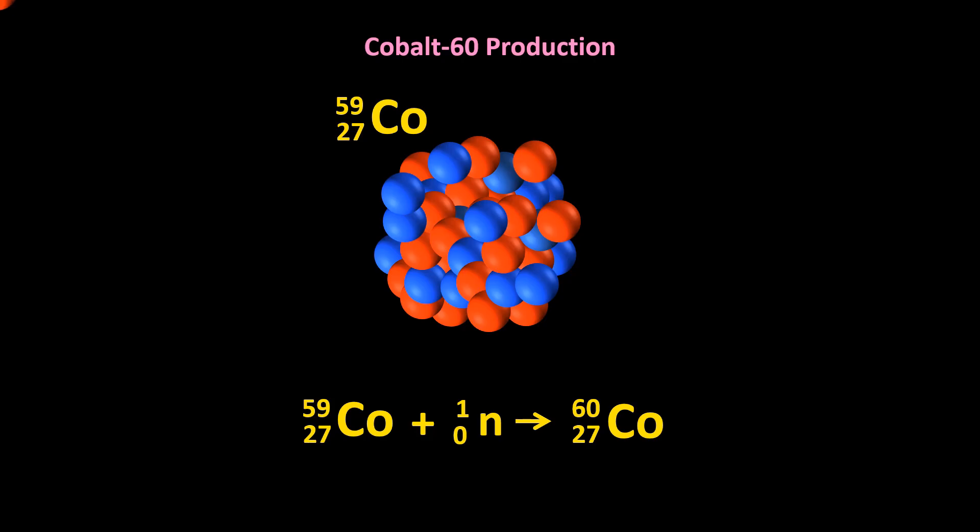So, if cobalt-59, for example, is placed into the chamber, the cobalt-59 nuclei absorb neutrons and turn into cobalt-60 nuclei. The process takes months.